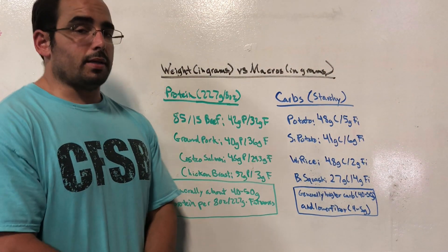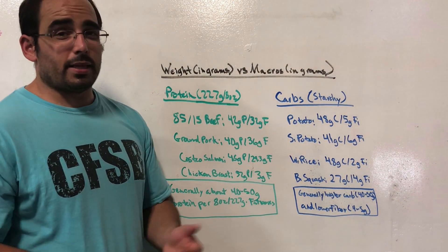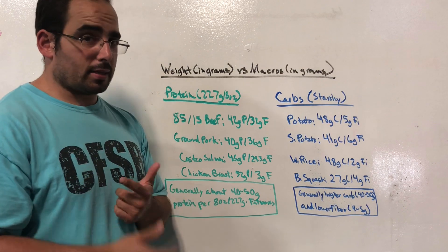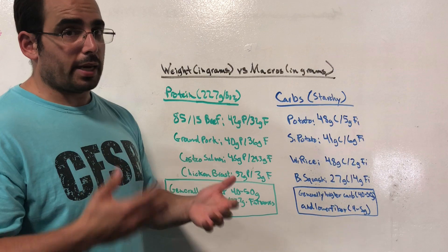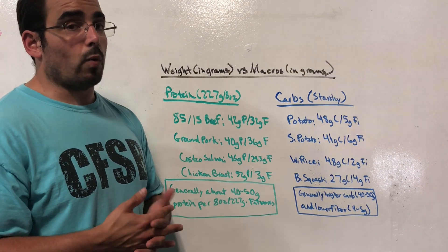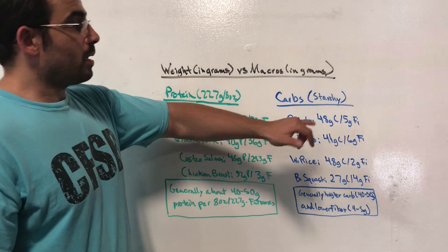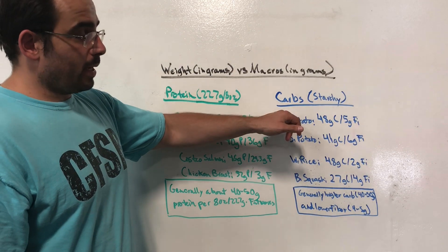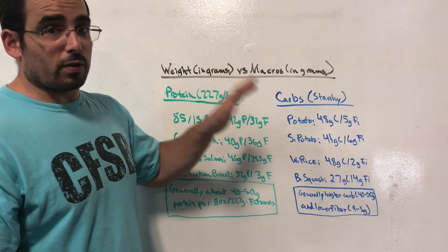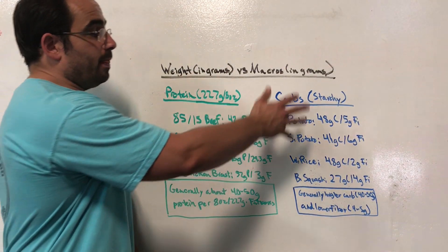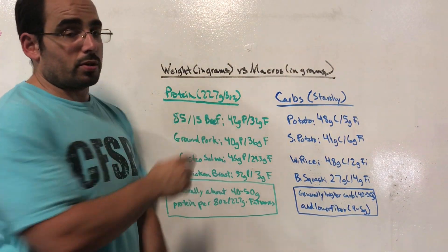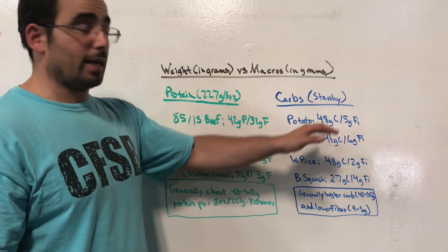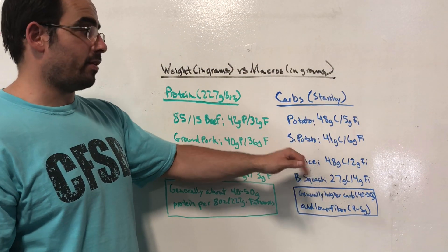Now, what about carbs? Starchy carbs, for example. You could apply this to fruit or non-starchy carbs, but starchy carbs are really going to be the main place that you're going to apply this if you're using weighing and measuring to do your macros. So with a white potato, well, first of all, I should say again, these carbs are all eight ounces or 227 grams. It's all the exact same size serving. And yet you can see that the carbs and the fiber vary.